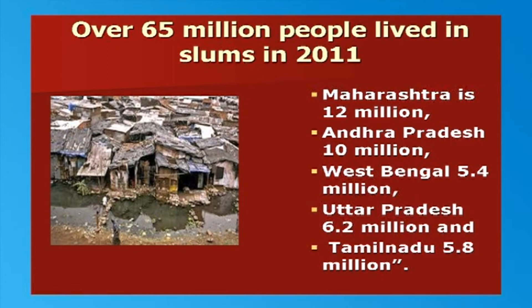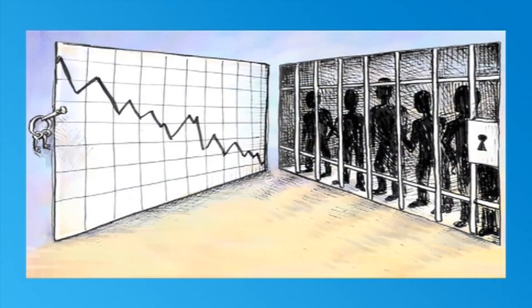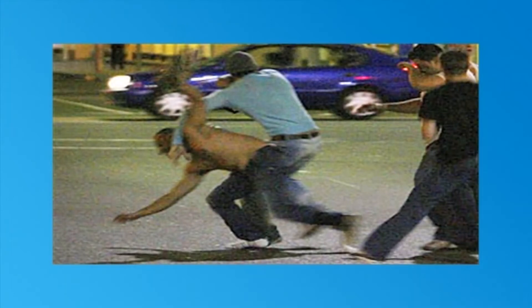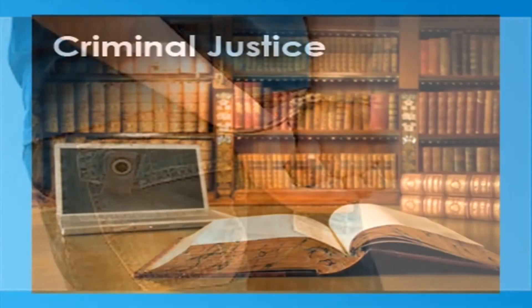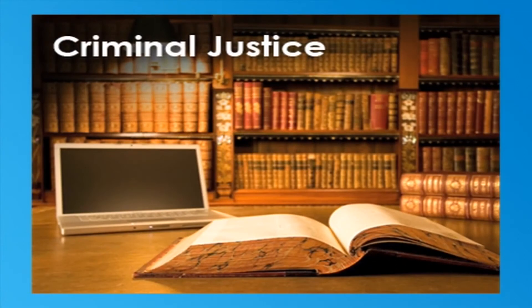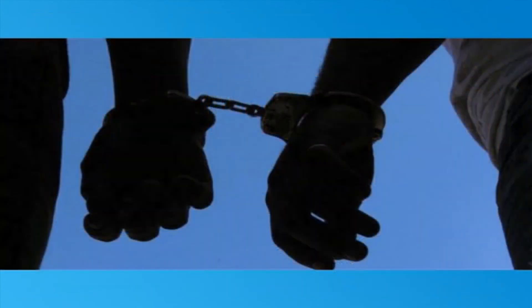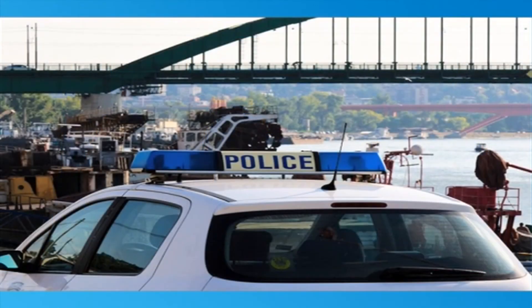Different states have varying levels of slums. According to the census data, the population of slums in Maharashtra is 12 million, Andhra Pradesh 10 million, West Bengal 5.4 million, Uttar Pradesh 6.2 million, and Tamil Nadu 5.8 million. The census report also says over a third of India's slum dwellers live in unrecognized slums. Generally, all the economic factors stated so far exert direct or indirect influence on the criminal tendencies of those who are economically exploited. All these factors act as push factors of criminality. If measures of deterrence are weak — meaning the functioning of the criminal justice system is weak — the crime rate is bound to keep on increasing, resulting in an increasing crime rate in urban areas.